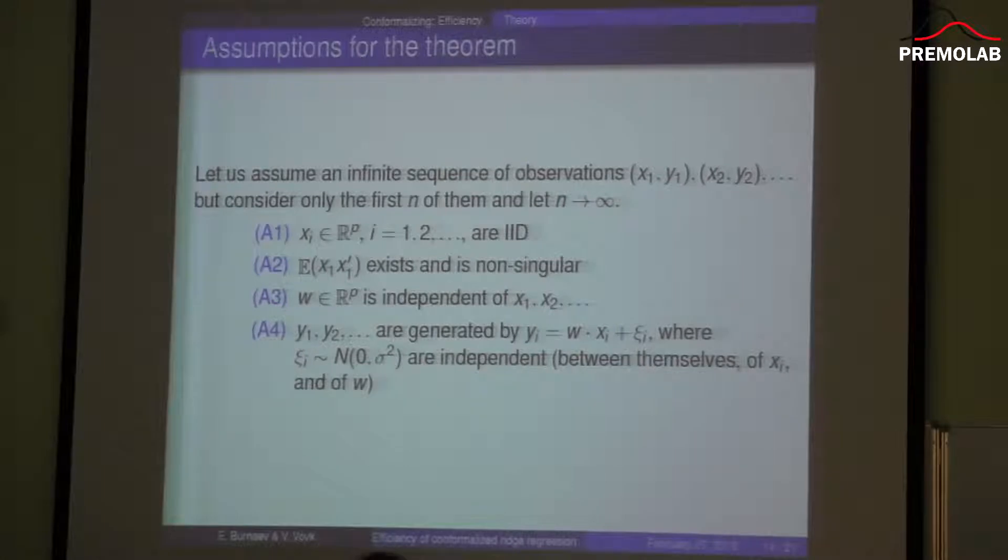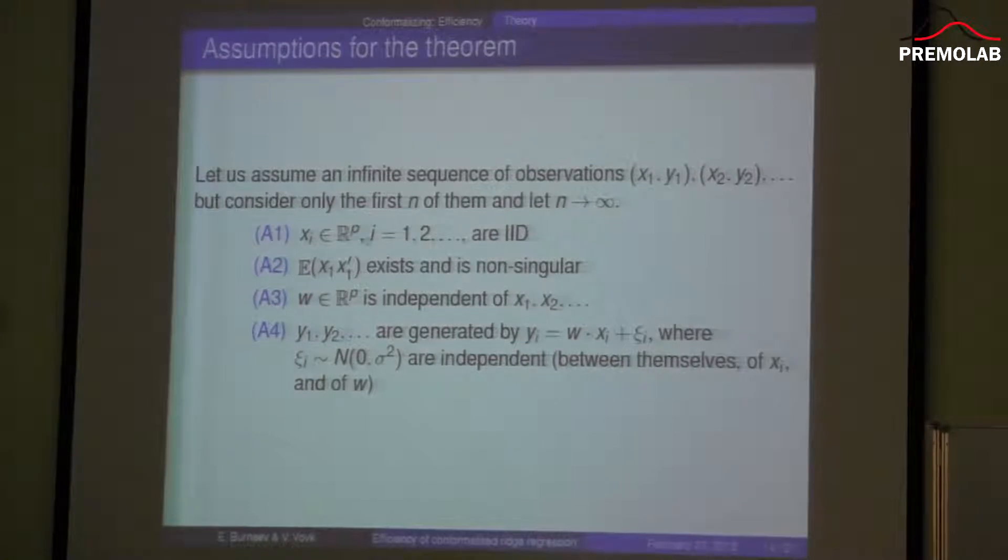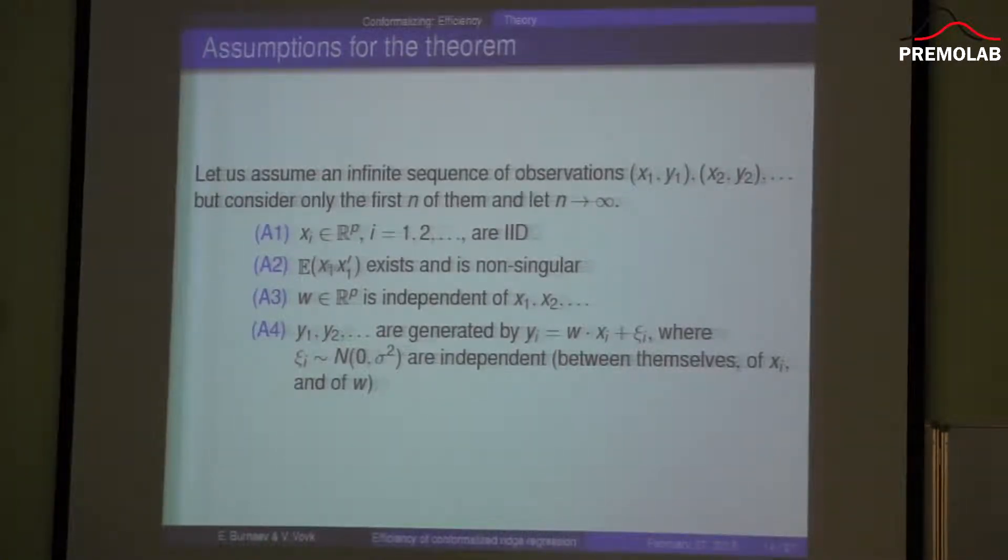Let's explore this question. We need some assumptions for these. We assume that we have an infinite sequence of observations, so we get observations in online mode. We consider only the first n of these observations. Features are p-dimensional. Feature covariance matrix exists and is non-singular. Vector of weights is independent of input vectors. In fact, we don't assume that this vector should have a prior normal distribution. We assume that our outputs are generated according to this model, where the noise is normal. All random variables here are independent between themselves and of observations.